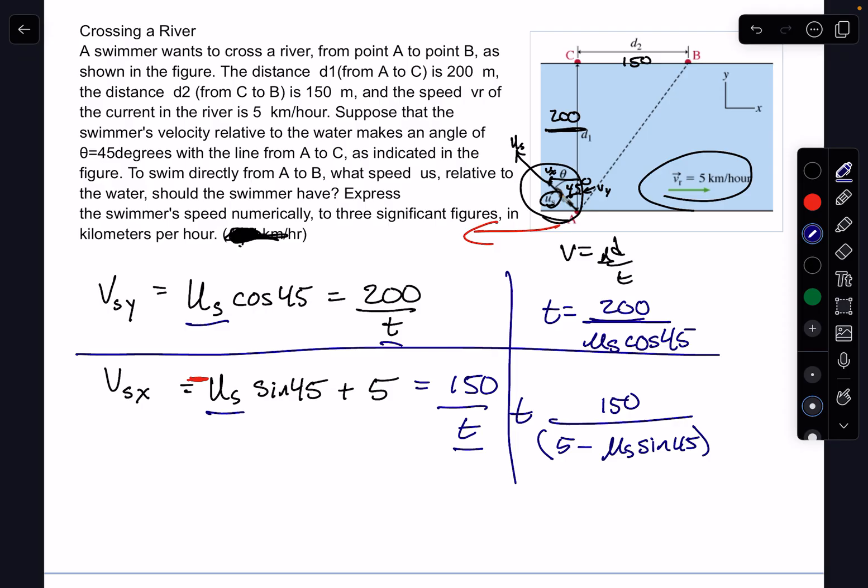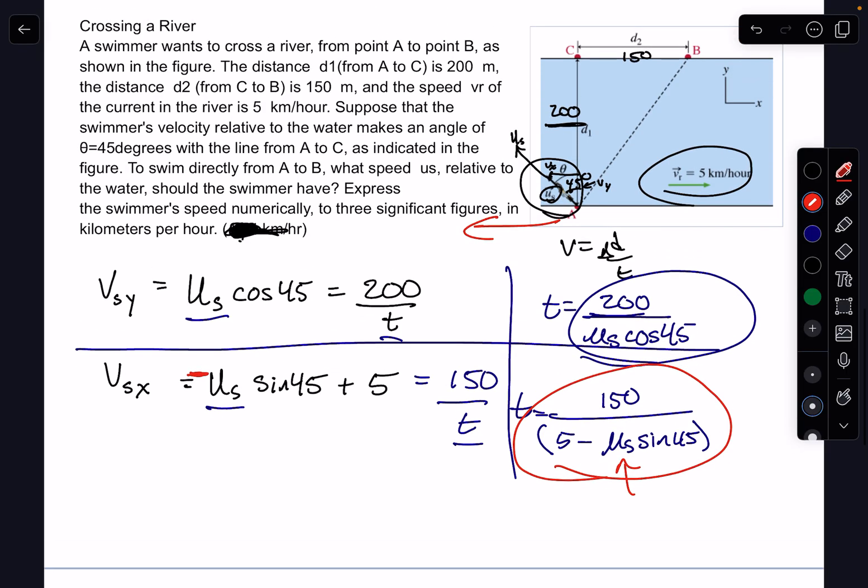it's 150 over the quantity of 5 minus Us sine 45. Since time equals time, I can set these two equations equal and solve for Us. Using a solver in my calculator, I got Us to be 4.04 meters per second.